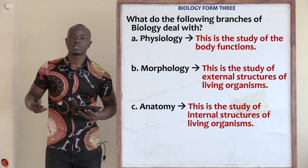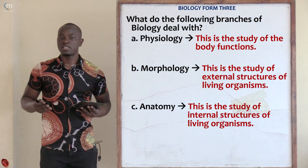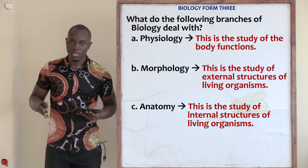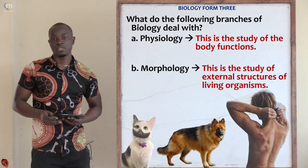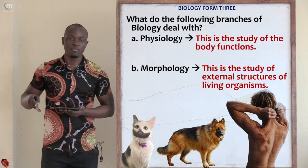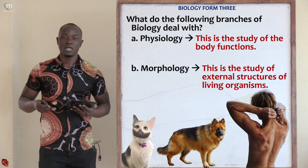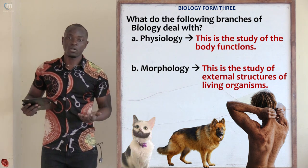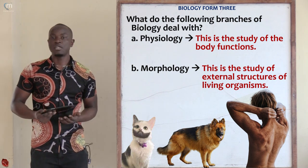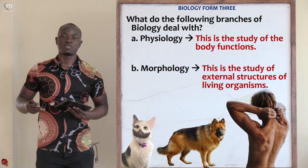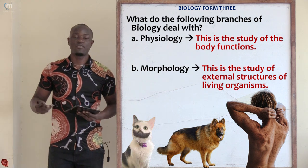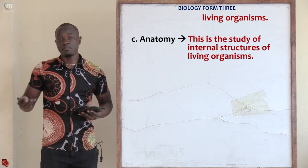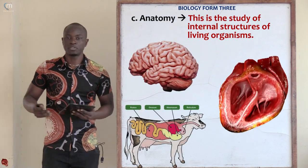Question B was asking about morphology. Morphology is the study of external structures, or the external surface, of living organisms. For example, if you study the fur of a cat, the hair of a dog, or the skin of human beings, that is under morphology, because you are studying the external structures of different living organisms.